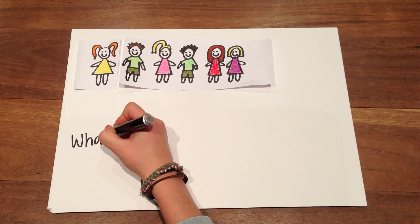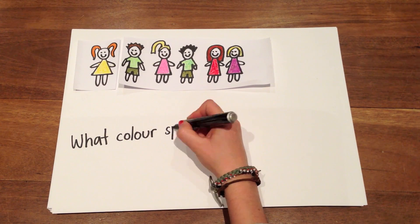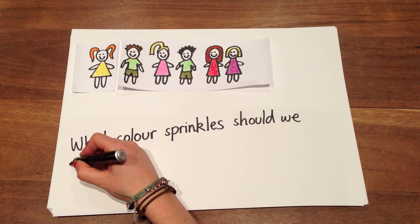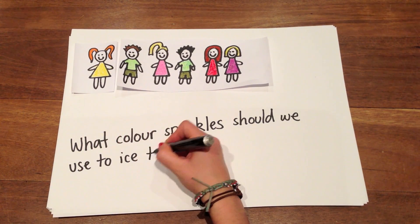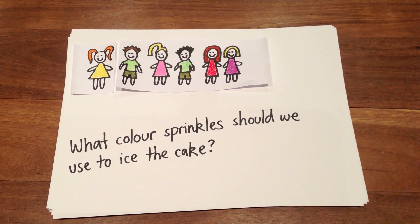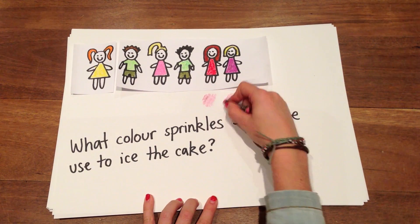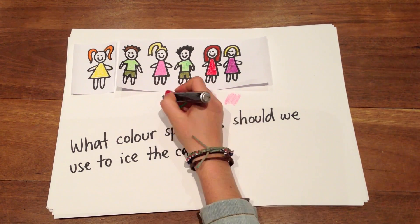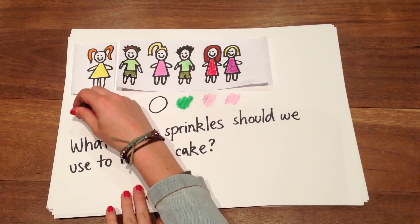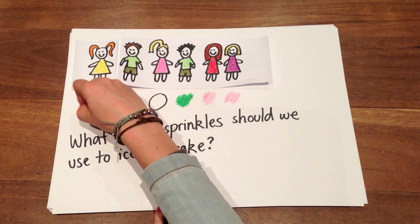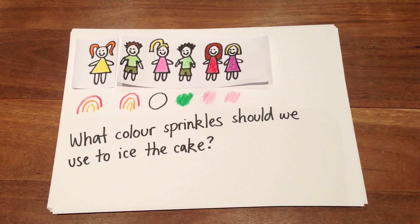Let's use the example of Lisa and her friends to graph categorical data. What colour sprinkles should they use to ice the cake? Two people want pink, one person wants green, one person wants white, and two people want rainbow.